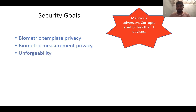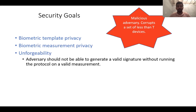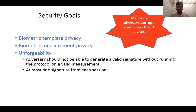And finally, we want the notion of unforgeability, which states that the adversary should not be able to generate a valid signature on any challenge without actually running the protocol on a valid measurement. By valid here, I mean that the measurement the protocol is run with should indeed produce a match with the template that was stored. Moreover, another requirement we have is that even by using a valid measurement and running an honest session, the adversary should not be able to generate more than one signature. In particular, in order to generate any fresh signature, you need to run a fresh session using a valid measurement.